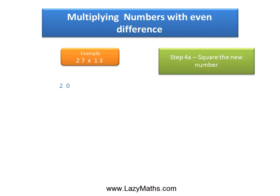The next step involves squaring this number 20. Square of 20 is 400, and then the next step is to square the half of the difference.